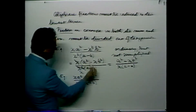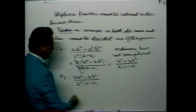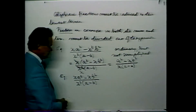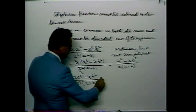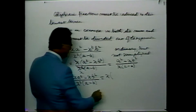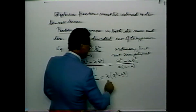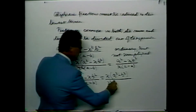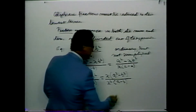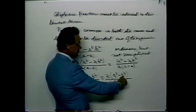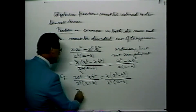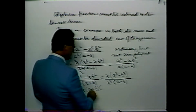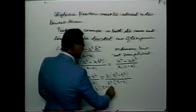Here is another example: xa squared minus xb squared divided by x squared times a minus b. Again, we have an ordinary fraction, but it's not simplified. This appears similar to the earlier example, but it is not — this term has x squared, whereas the earlier one had simply x. Factors, recall, are things that are multiplied to produce products. So if we take x out as a common factor in the numerator, we can write x multiplied by a squared minus b squared.